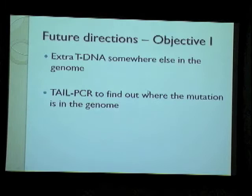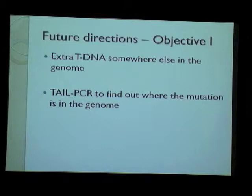This led us to conclude that there may be an extra T-DNA insertion somewhere else in the genome, and one of the ways to find that out is through TAIL PCR.